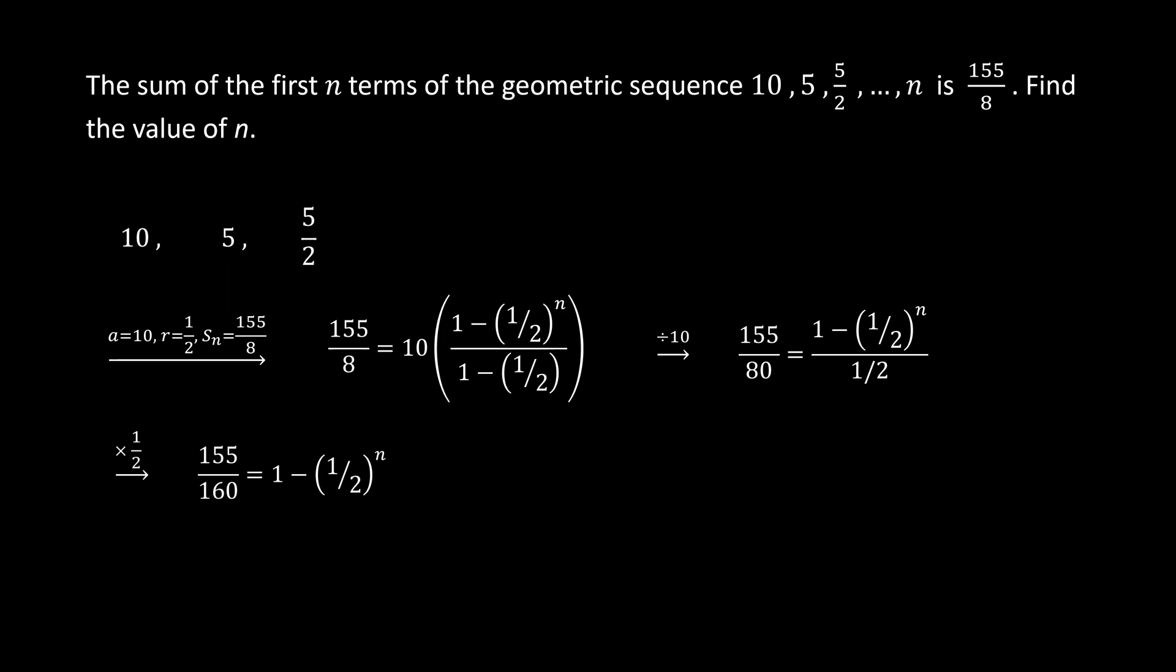Next, we multiply both sides by 1/2 to eliminate the denominator on the right-hand side. We get 155 over 160 equals 1 minus (1/2)^n.